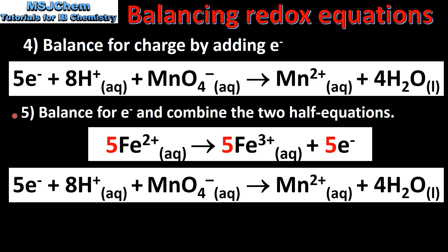The final step is to balance for electrons and combine the two half equations. Here we have the equation for the oxidation of Fe²⁺ to form the Fe³⁺ ion. The number of electrons in the two half equations must be the same. In order to get the same number of electrons in both half equations, I've multiplied everything in the top equation by 5, giving us 5 Fe²⁺, 5 Fe³⁺ and 5 electrons. We then cancel out the electrons and combine the two half equations.